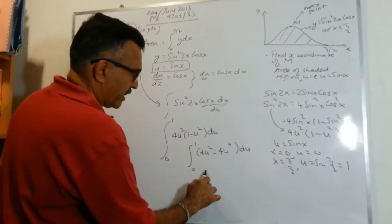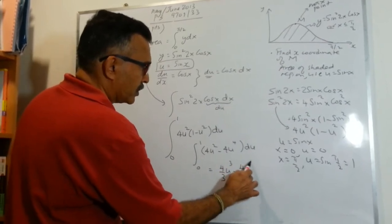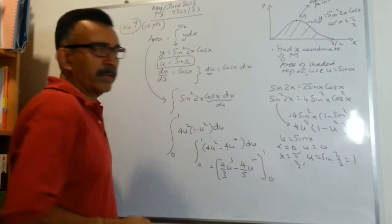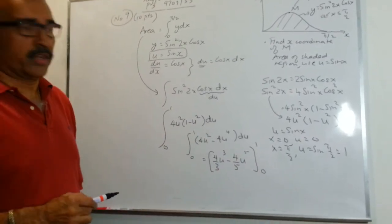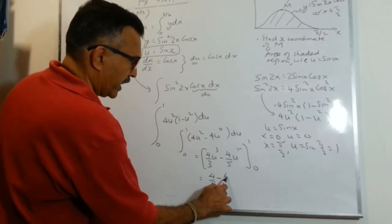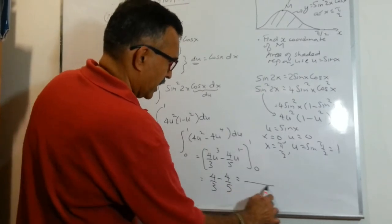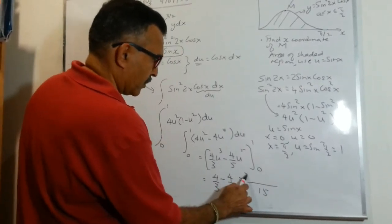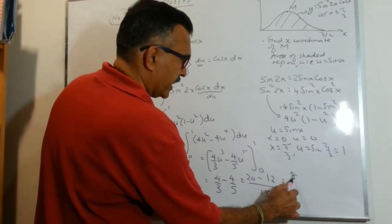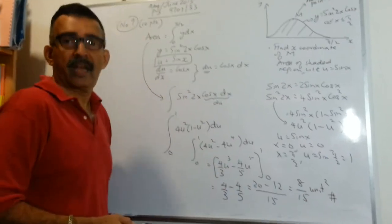Let's bring this up. Let's integrate. We have 4/3 u cubed minus 4/5 u to the power of 5, and we have our upper limit 1 and our lower limit 0. So plug in 1, we will get 4/3 minus 4/5. And this will be, I have got 20 minus 12, and you will get 8/15 units squared. And we are done.